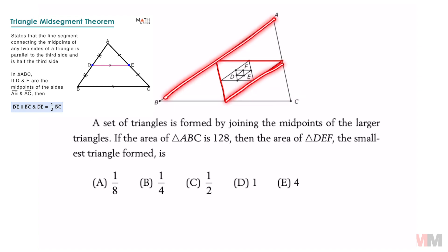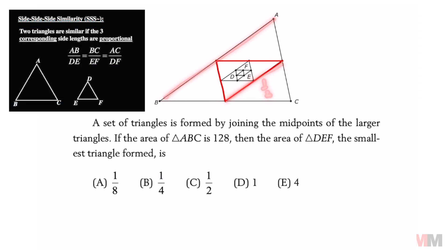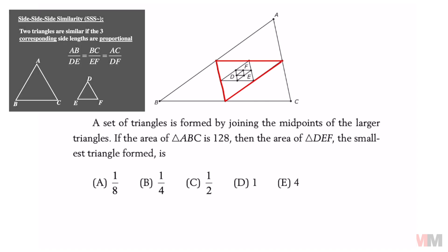So since all of the sides have that common ratio of one half, then triangle ABC is going to be similar to the red triangle through SSS.